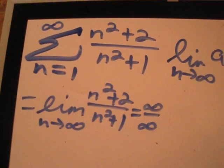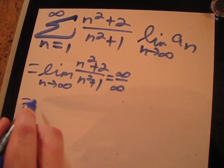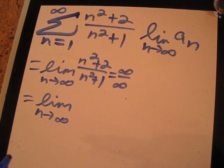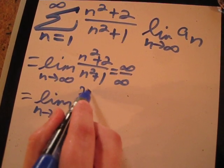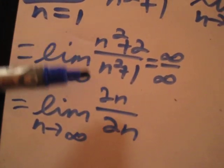So now we will differentiate the numerator and the denominator and continue to apply the limit. This will turn into the limit as n approaches infinity of 2n over 2n, using the power rule to differentiate each of these.